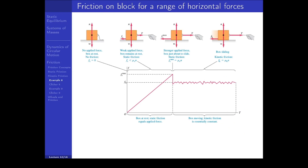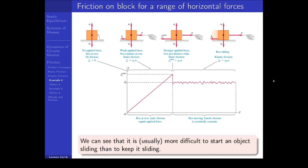Let's look at how friction changes as you pull on a block. Initially with no pull, there is no friction force because there is nothing to oppose. As you pull harder and harder, the static friction force increases to match the tension force — due to Newton's first law, with no horizontal acceleration these forces must match — until you pull so hard that friction rises to its maximum and the block just starts to slide. At that point the kinetic friction force is usually less than the maximum static friction force: it's easier to keep the block in motion than to get it started. Even if you pull harder, the kinetic friction force remains approximately constant.